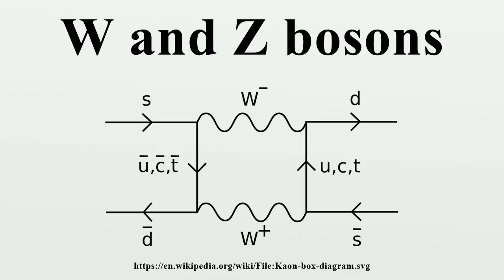All three of these particles are very short-lived, with a half-life of about 3×10⁻²⁵ seconds. Their discovery was a major success for what is now called the standard model of particle physics. The W bosons are named after the weak force.